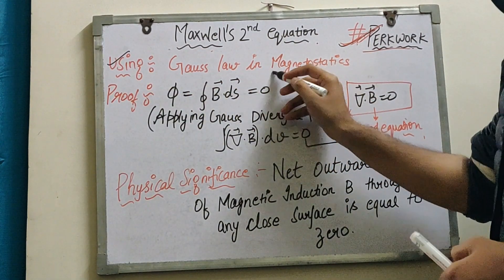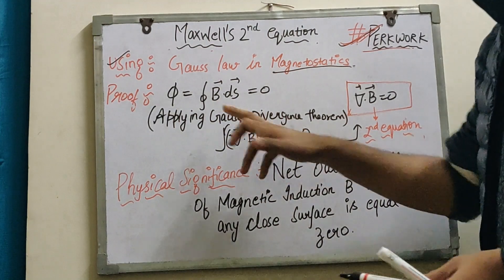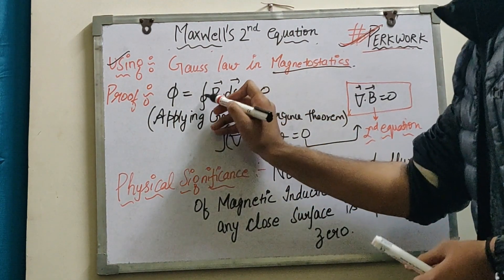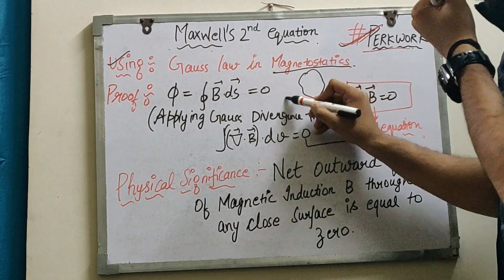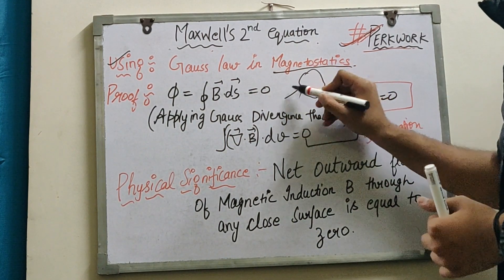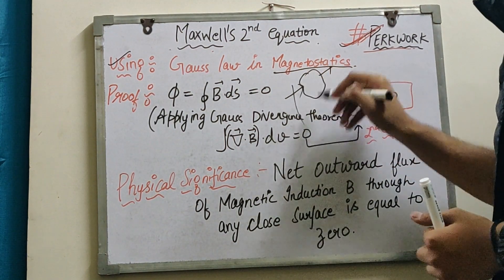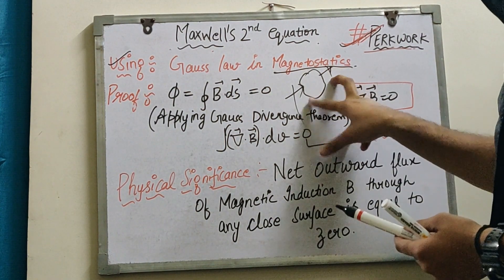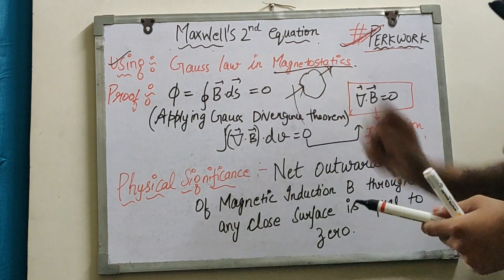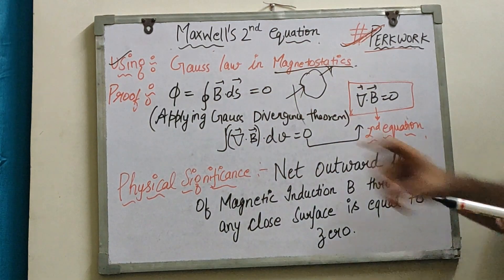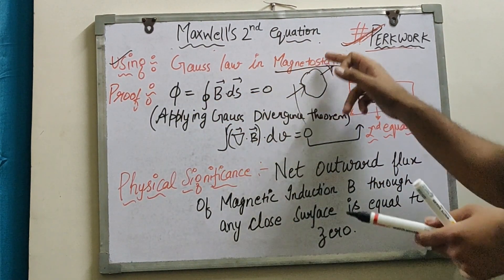Gauss's law in magnetostatics states that the closed integral ∮B·ds equals zero. This means the incoming magnetic flux and outgoing flux cancel each other - the positive and negative contributions result in zero. In magnetostatics, the flux ∮B·ds equals zero. This is already known.